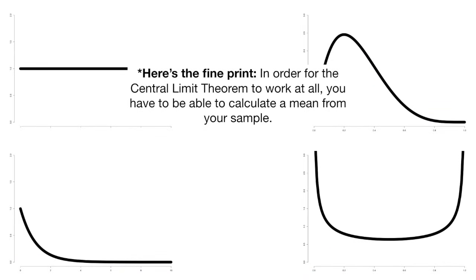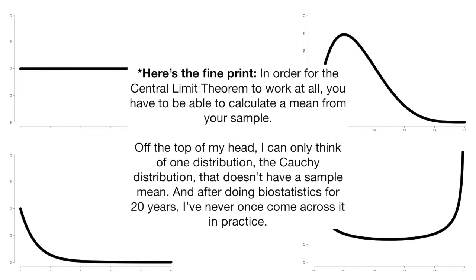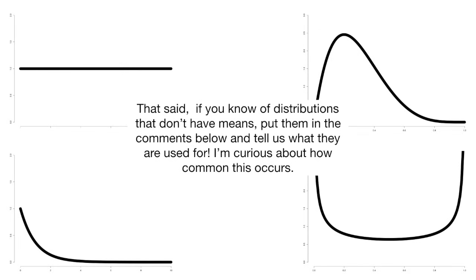Here's the fine print. In order for the central limit theorem to work at all, you have to be able to calculate a mean from your sample. Off the top of my head, I can think of only one distribution, the Cauchy distribution, that doesn't have a sample mean. And after doing biostatistics for 20 years, I've never come across it in practice. That said, if you know of distributions that don't have means, put them in the comments below and tell us what they're used for. I'm curious about how common this occurs.